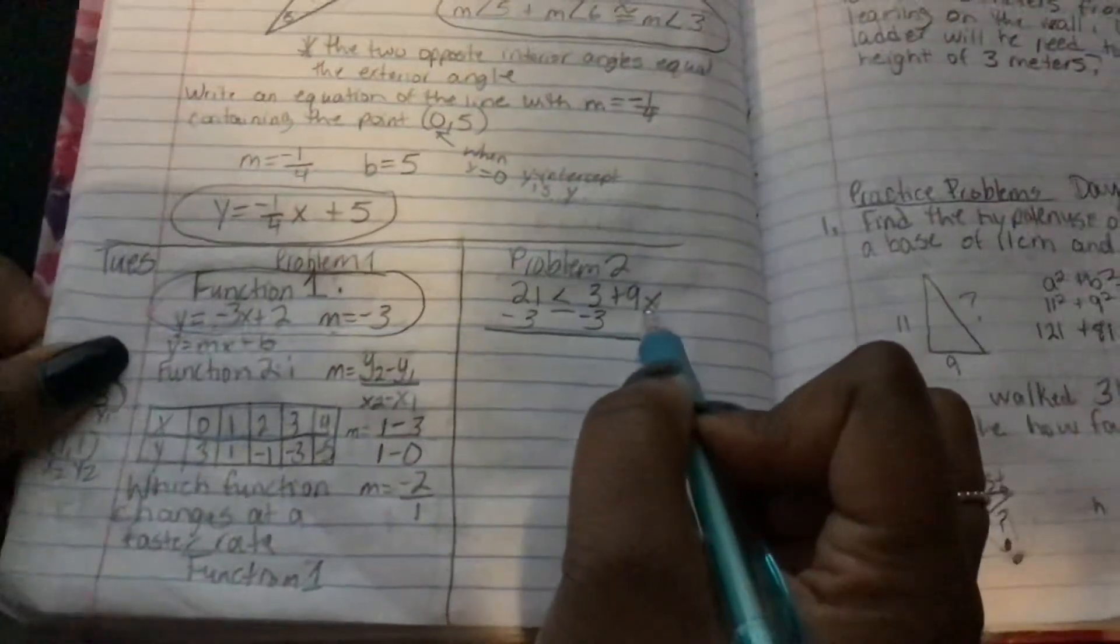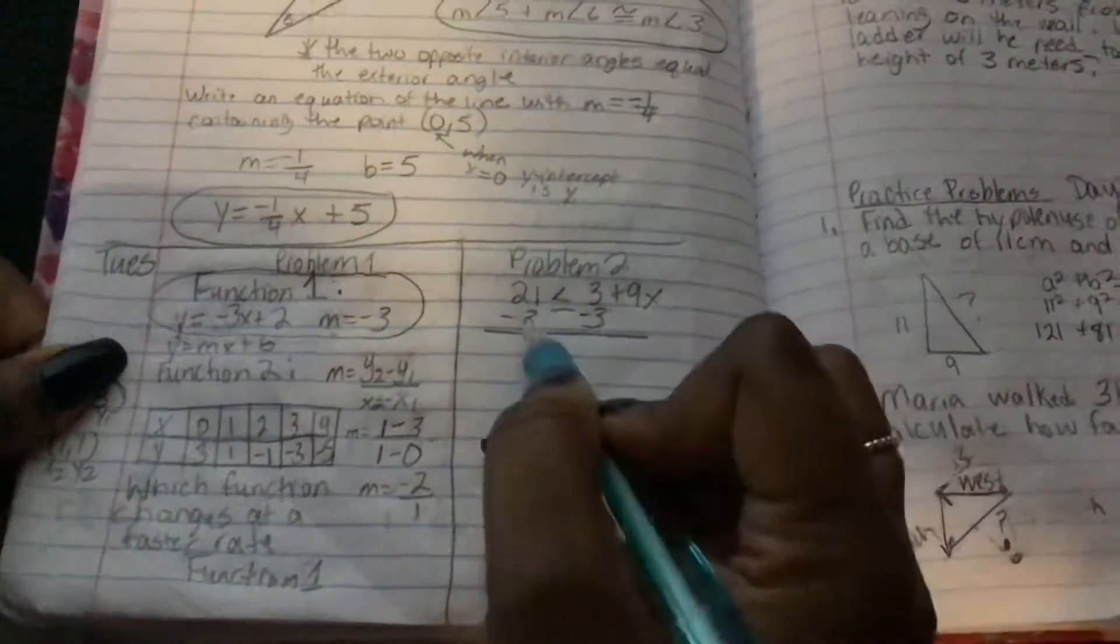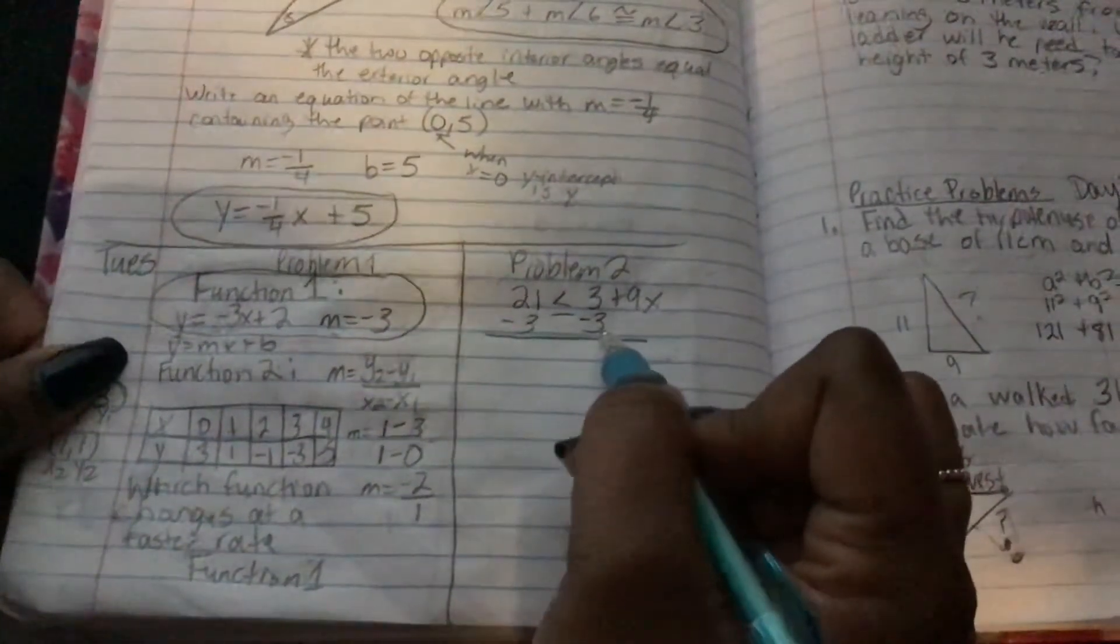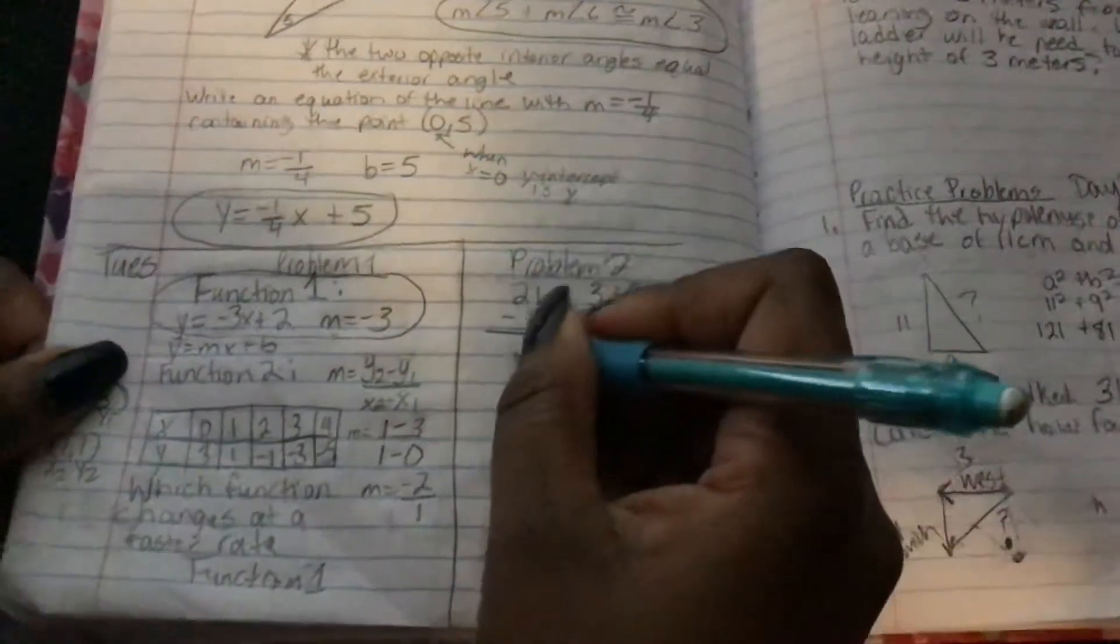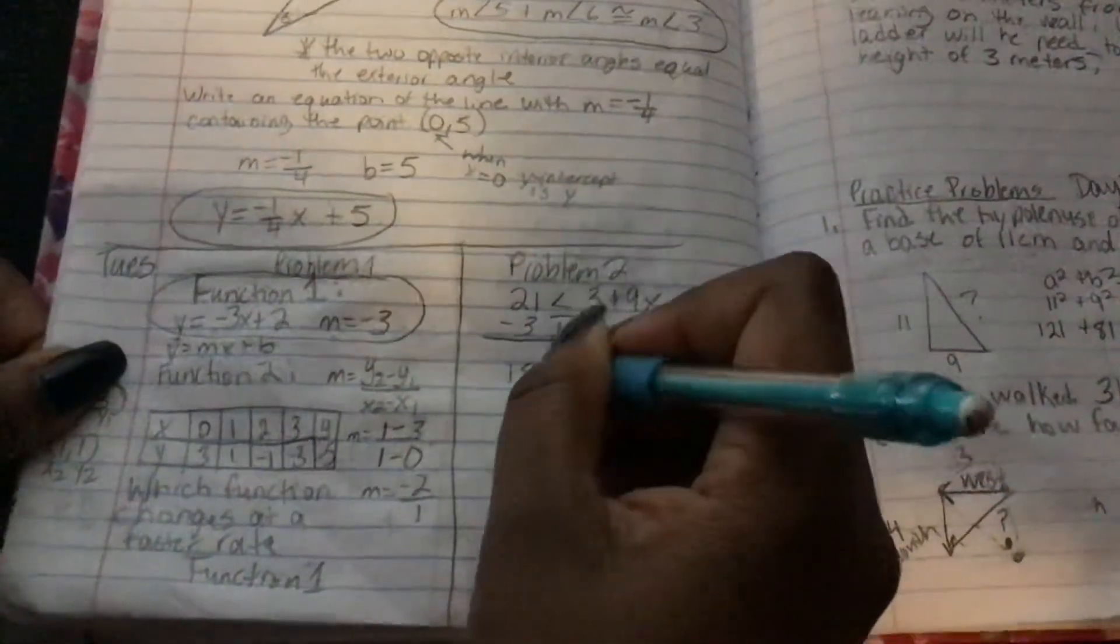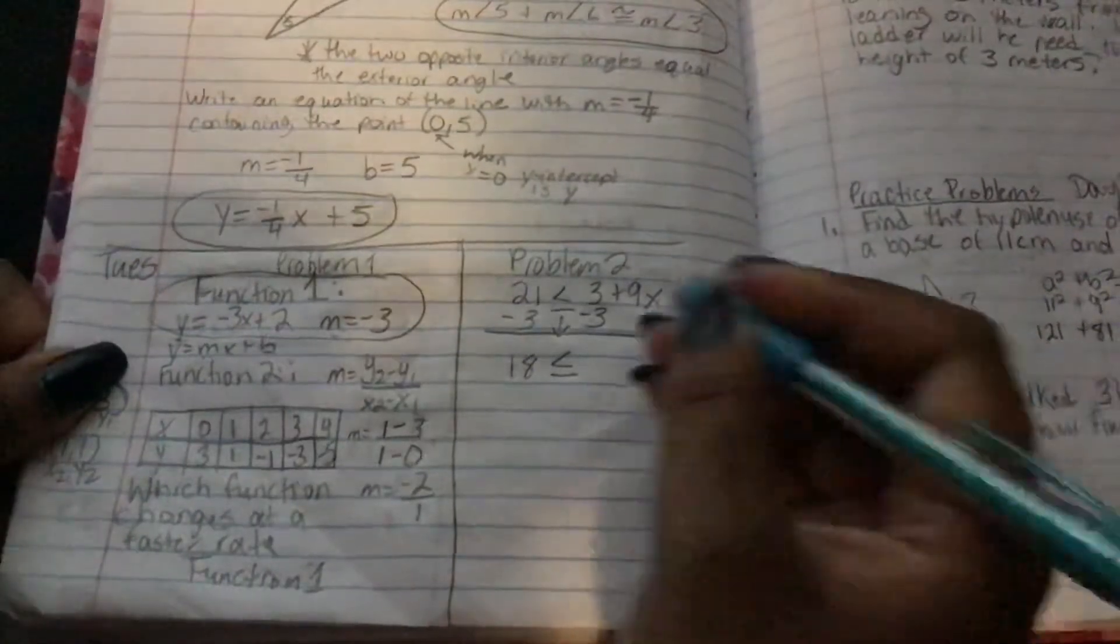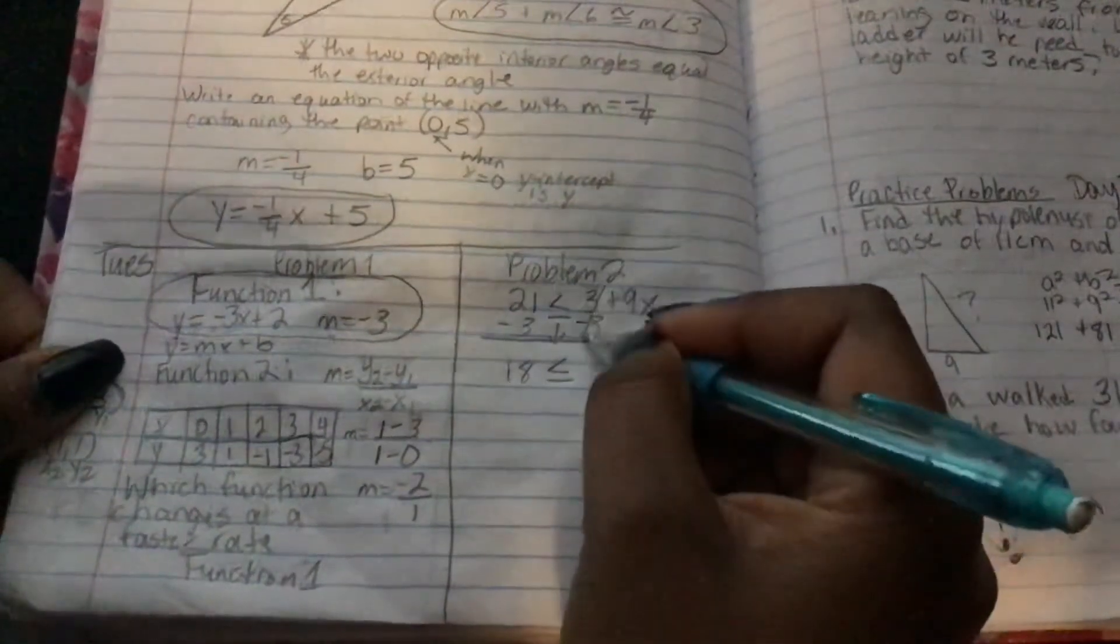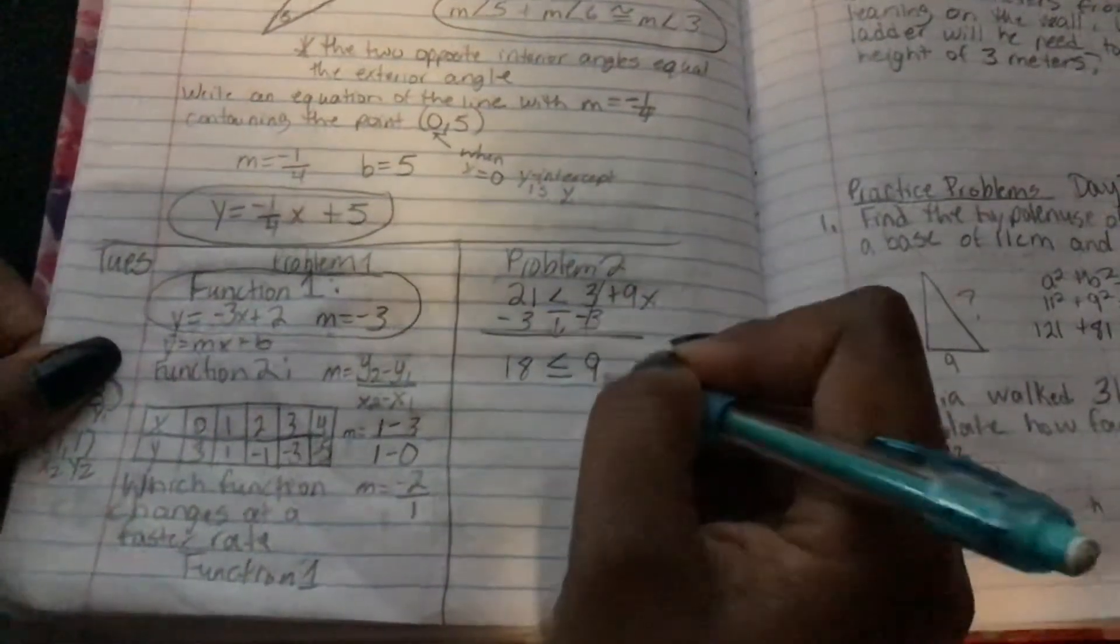So let's look at this one right here. Here, in order to get x by itself, we're going to subtract 3 on both sides. 21 minus 3 is going to give us 18. We're going to bring down the inequality here. 3 minus 3 gives us 0, so we're left with that 9x.